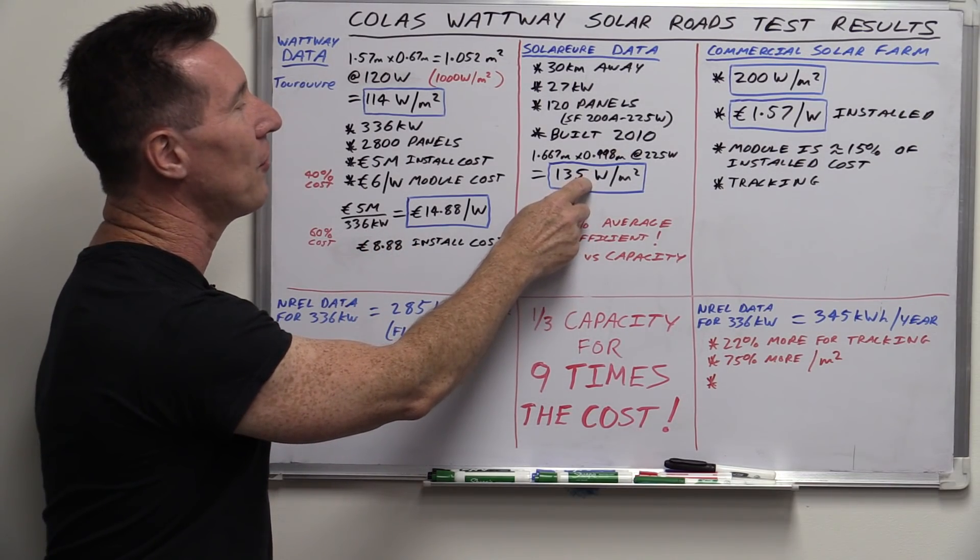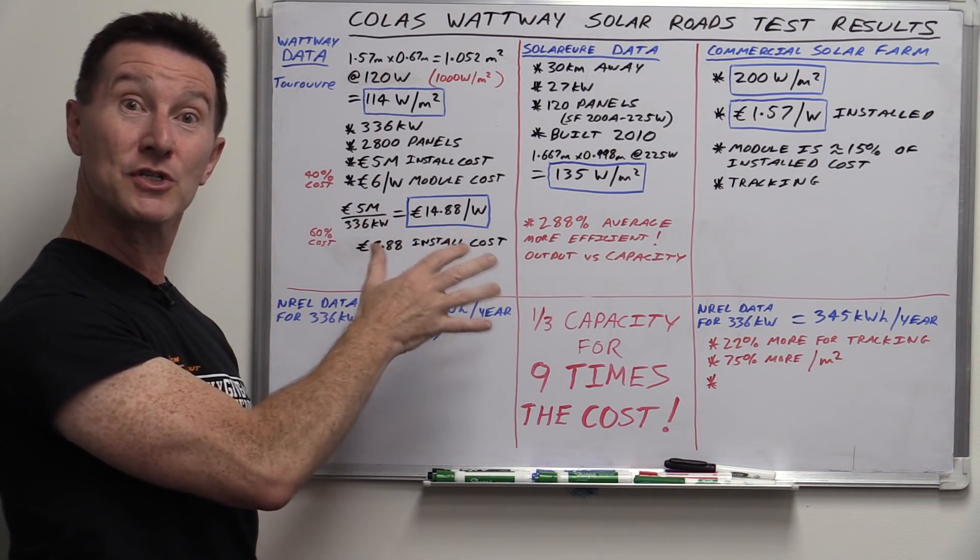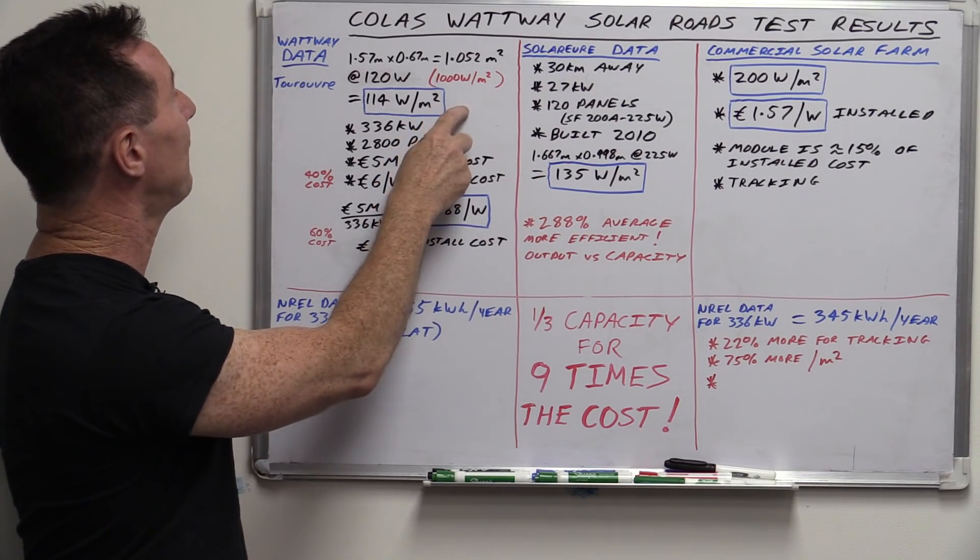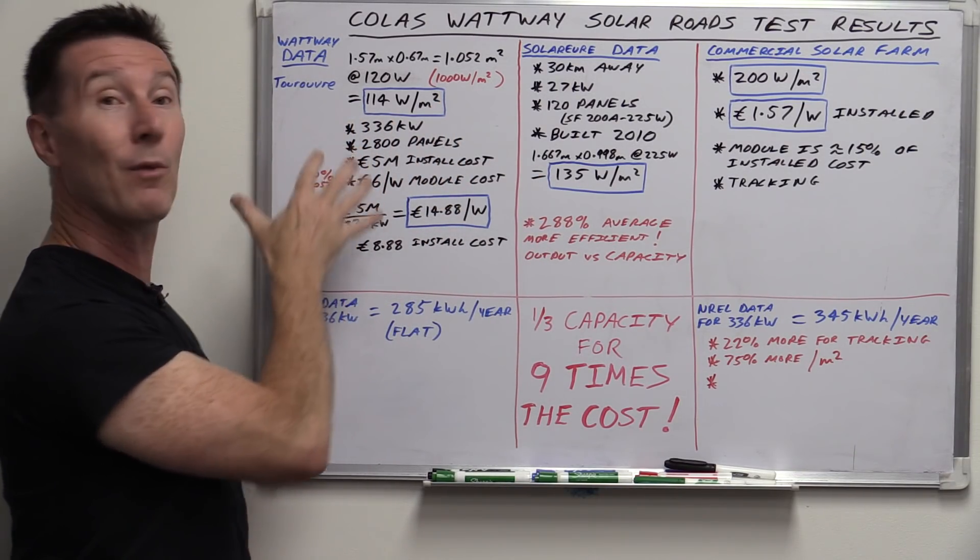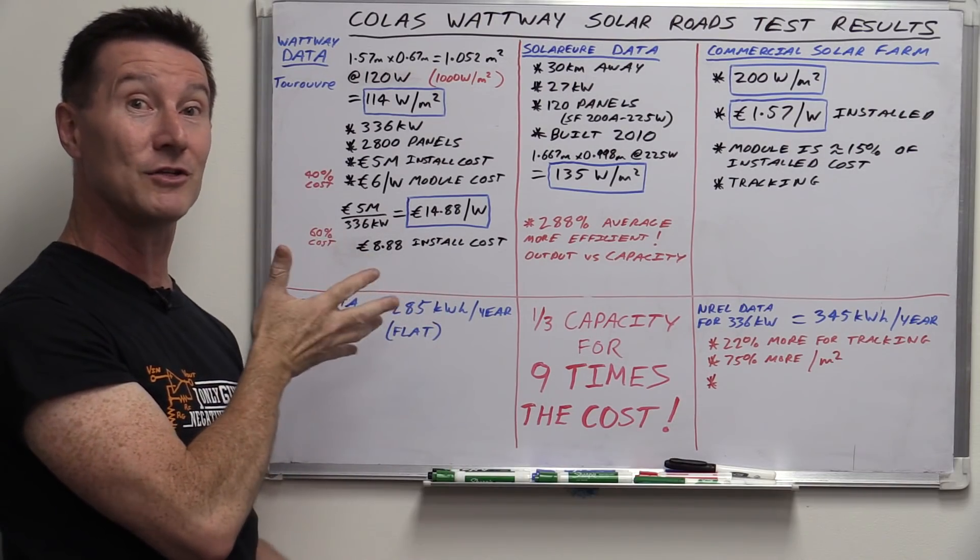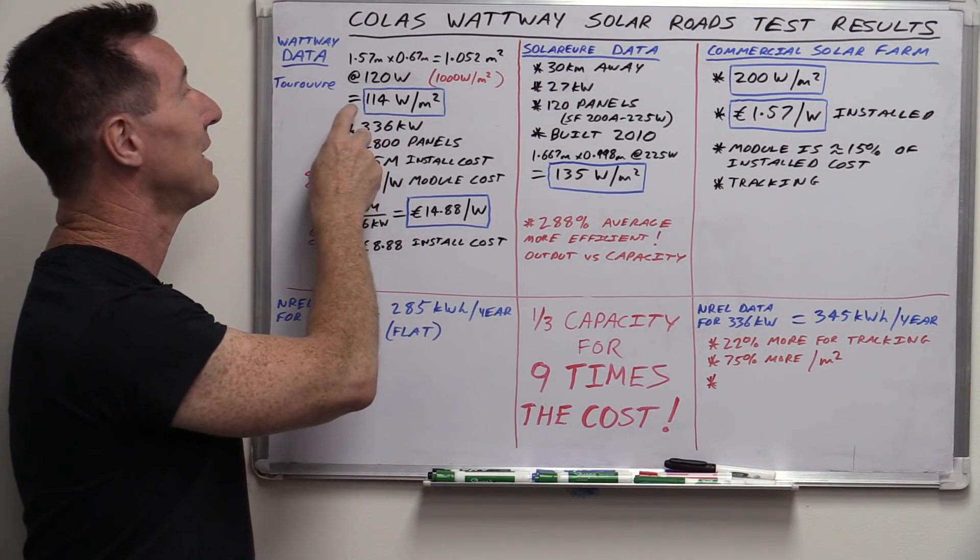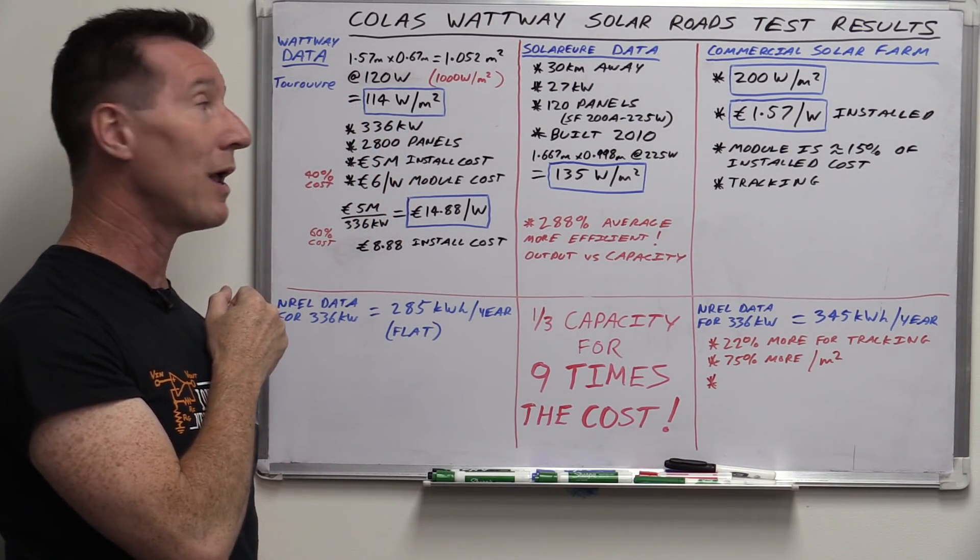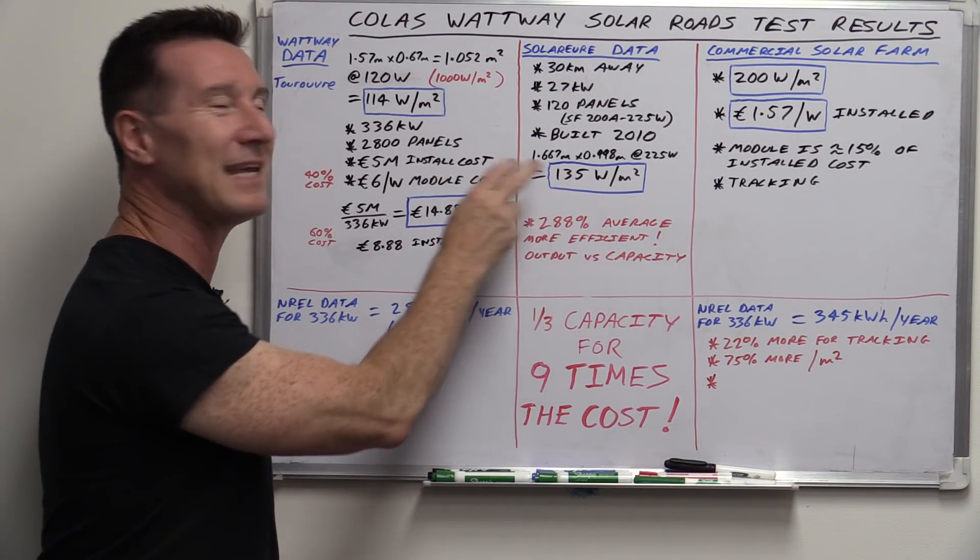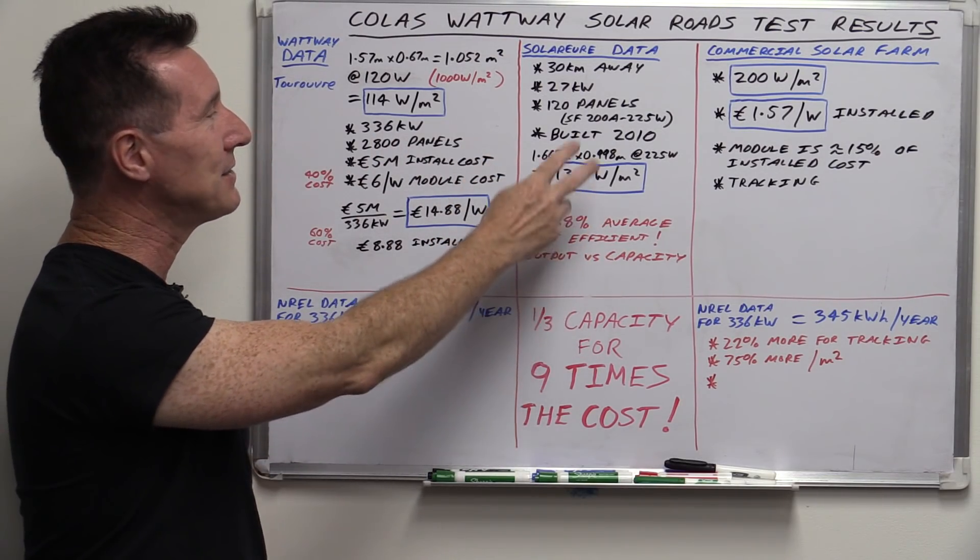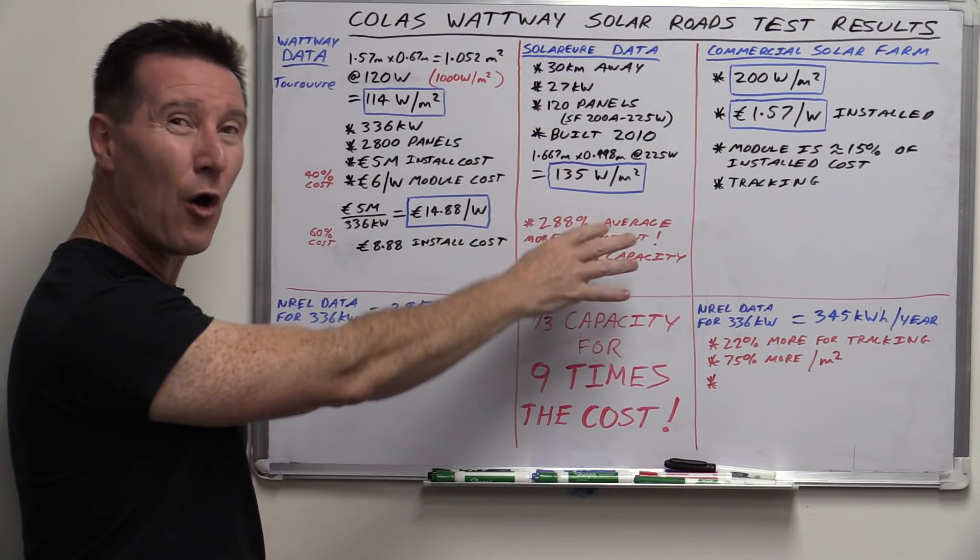And it doesn't actually use particularly good solar panels. They're quite old. And they're only 135 watts per square meter normal output. If you compare that up here to the Colas Wattway one, which is the best modern technology they can get, I'm sure, which is only 114 watts per square meter. You can already see, just compared to your average home-based solar panels, they're not very good. And old ones at that.